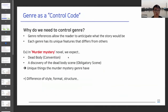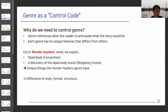So why do we need to control genre? Because genre references allow the reader to think about what the story would be, and we can easily differentiate each genre by its unique features. For example, if you find a novel whose genre is murder mystery, you can expect a dead body and a scene where someone discovers it. People anticipate such conventions and obligatory scenes when they know the genre. Therefore, we choose genre as a control factor of our story generation.